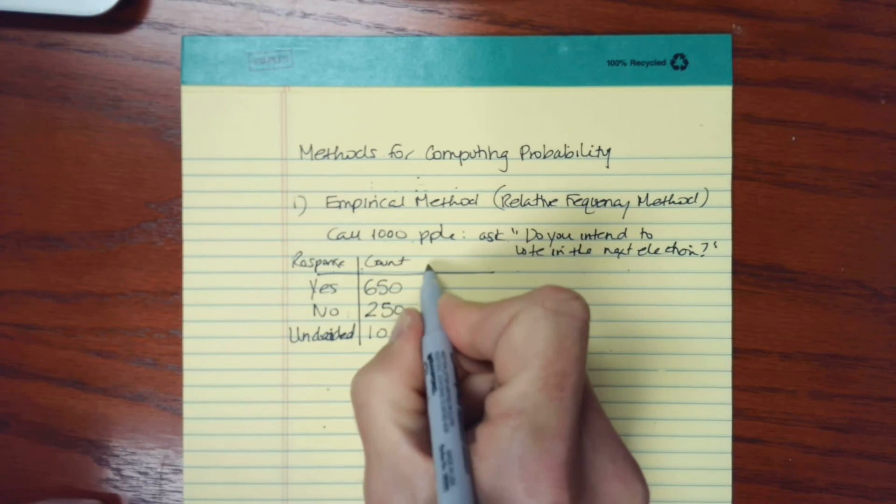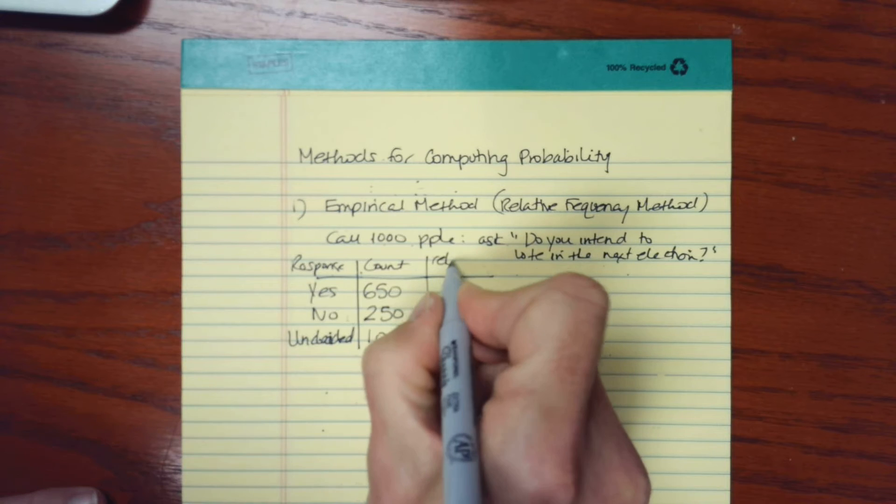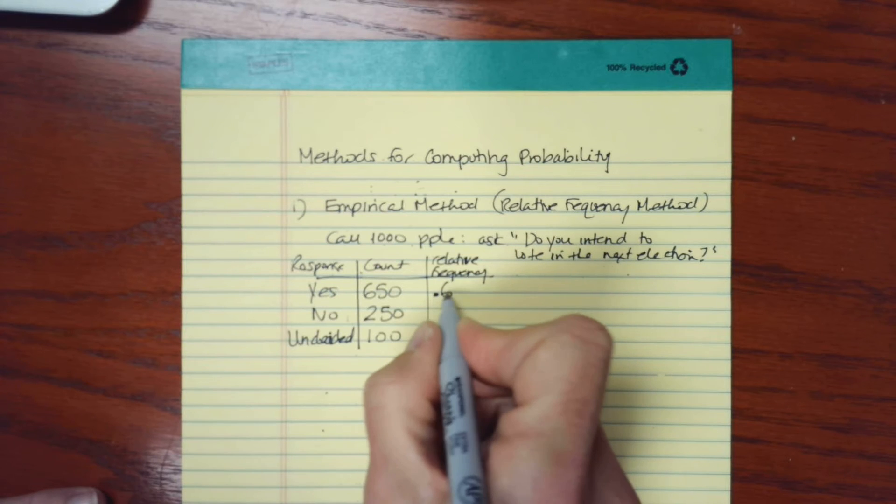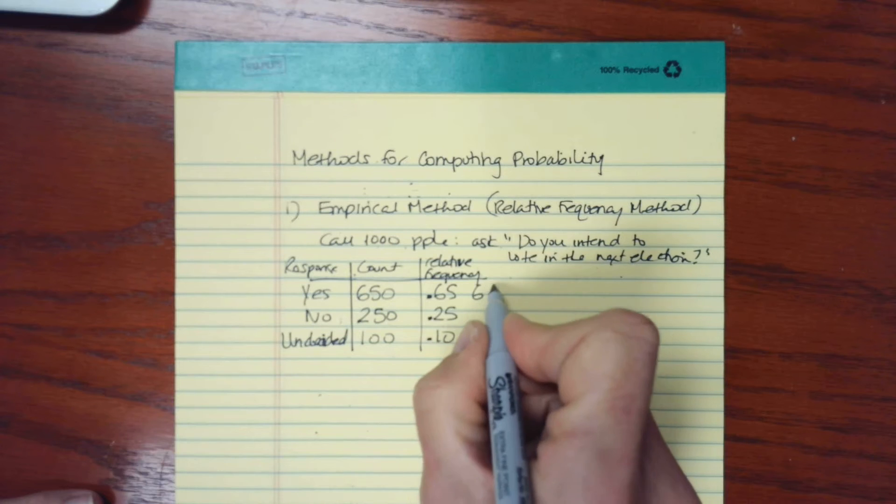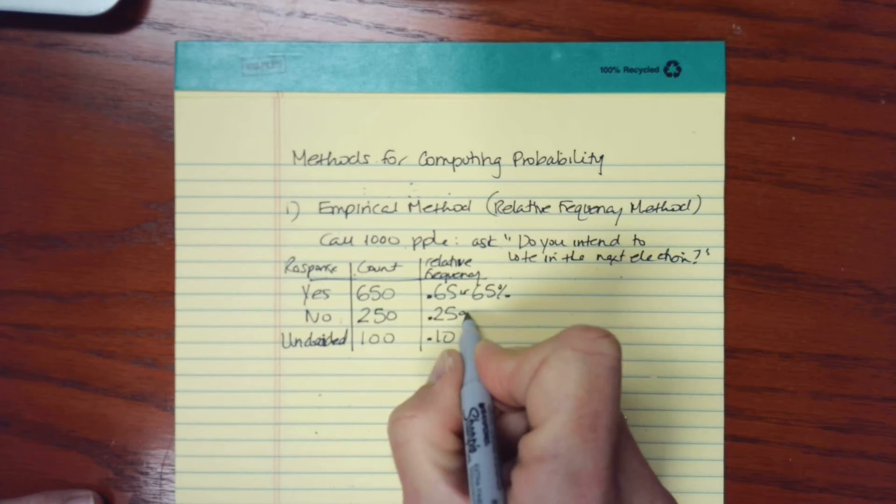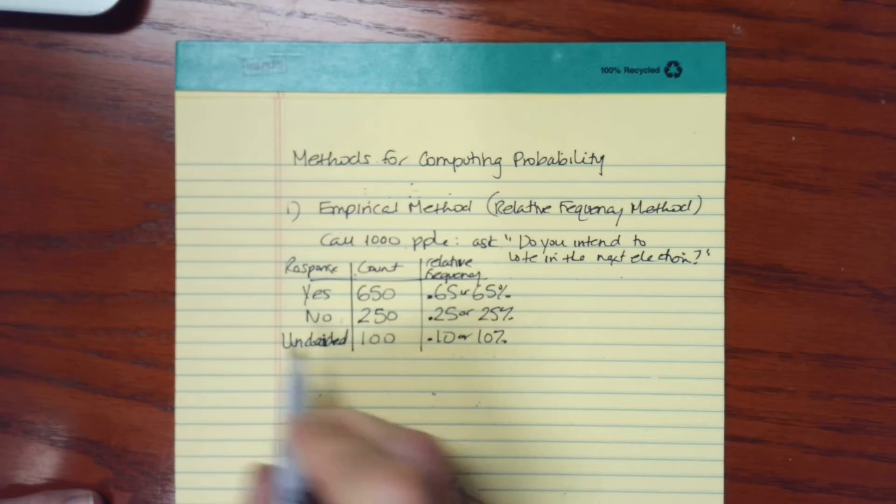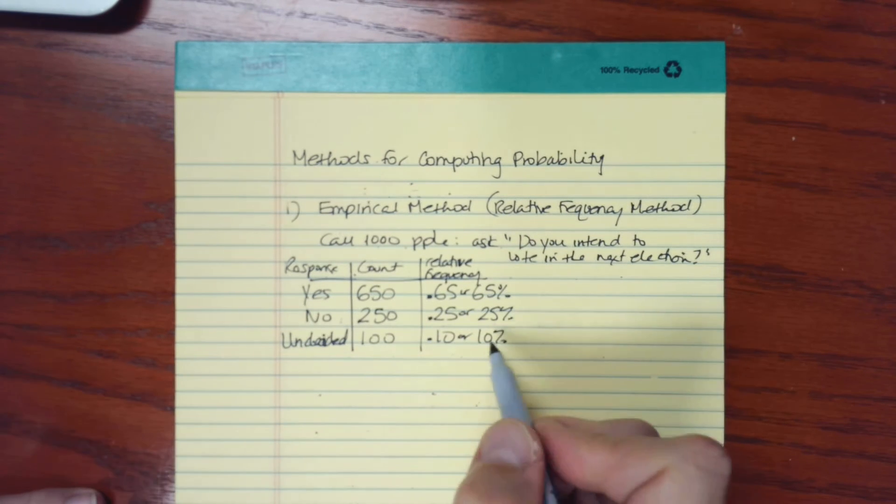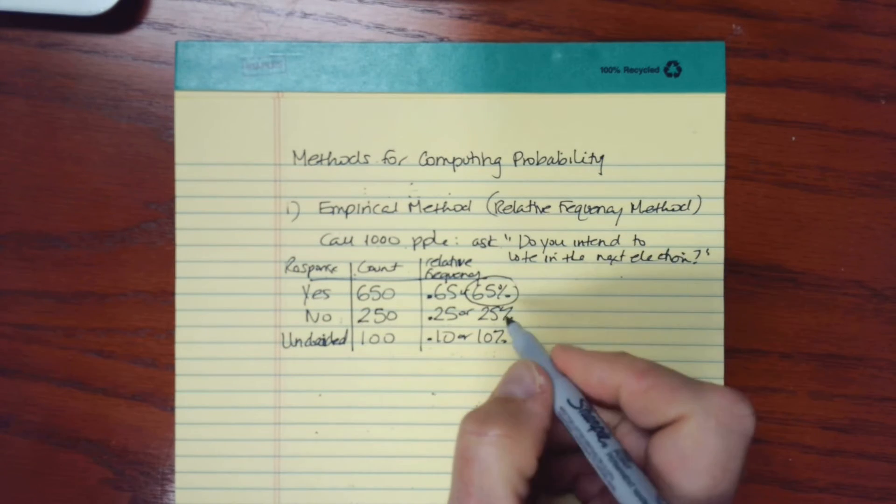We can convert these counts to percentages. That's our relative frequency. This would be 0.65, 0.25, and 0.10, or 65%, 25%, and 10%. So we could say that if you call someone randomly, the chance that they will say they intend to vote is 65%. We're using these proportions as estimates for the probability.